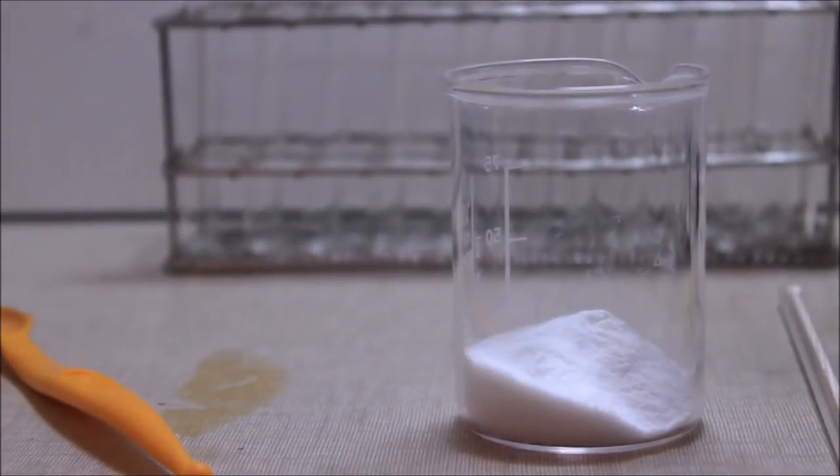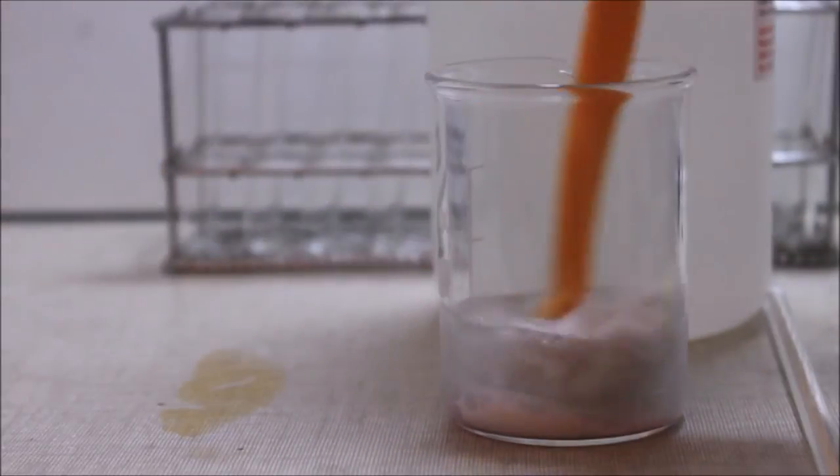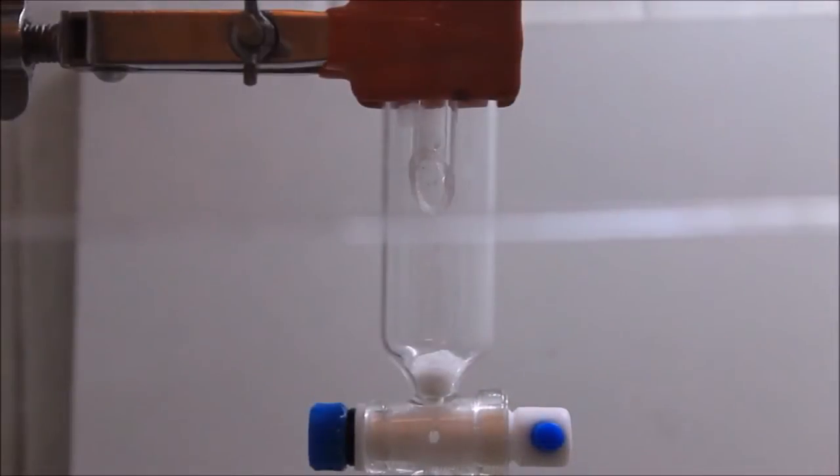Column chromatography is an analytical chemistry technique used for the separation, identification, and quantification of the main components of a sample. This technique is usually employed by organic chemists in order to purify the product of a reaction or to isolate a given component from a sample.